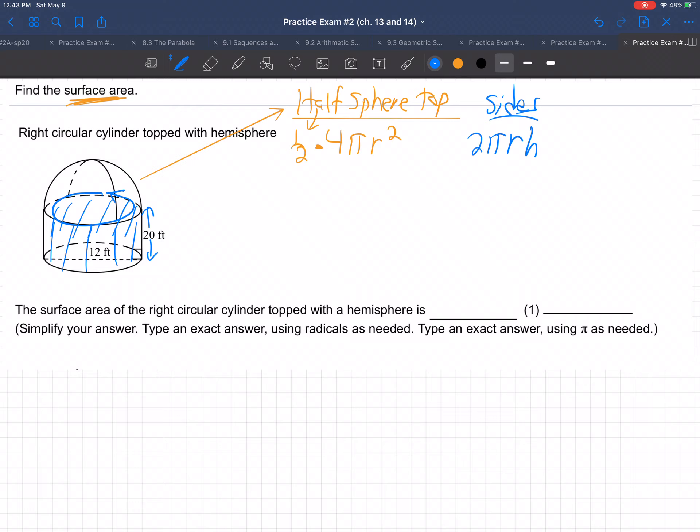Because if you cut this open, it would unroll like a big rectangle, wouldn't it? Remember us talking about that? And that would be 20 tall and 2πr wide. That's where we get that formula, 2πrh.